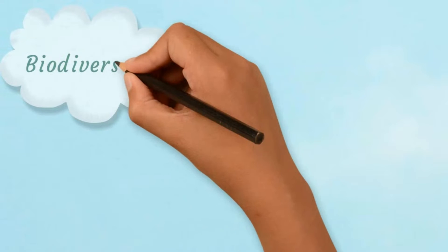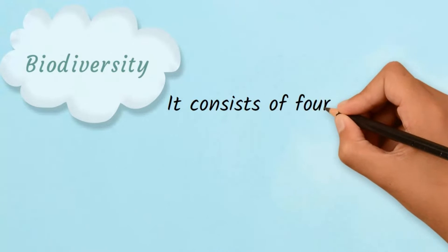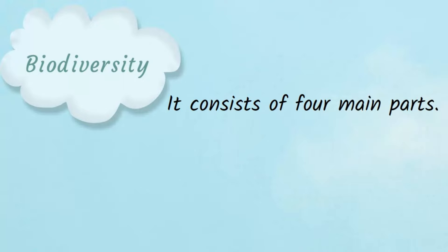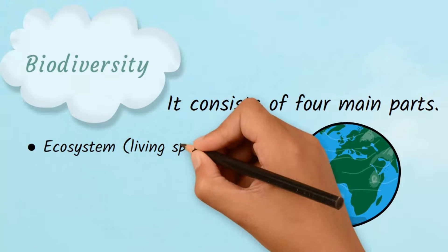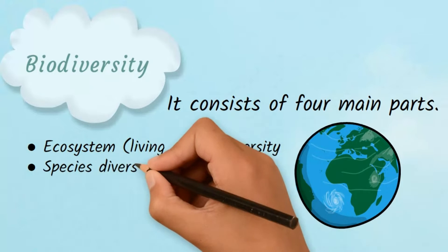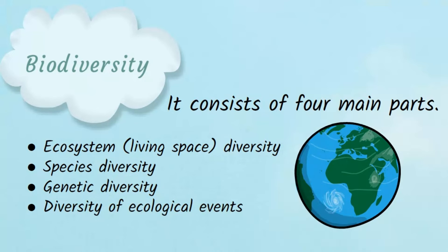Biodiversity consists of four main parts: Ecosystem Diversity, Species Diversity, Genetic Diversity, and Diversity of Ecological Events.